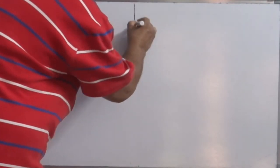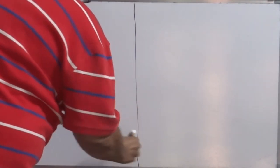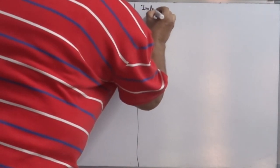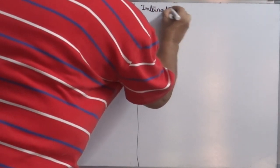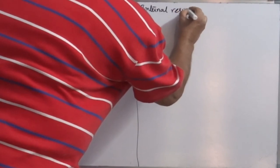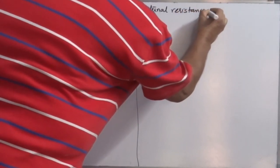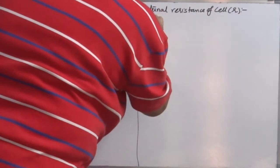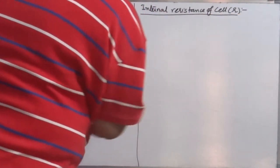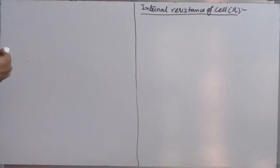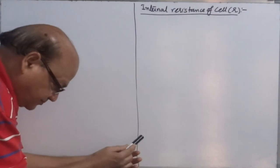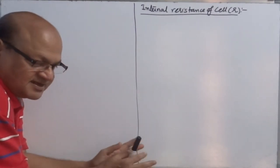Internal resistance of cells is represented by small r. What is an internal resistance?